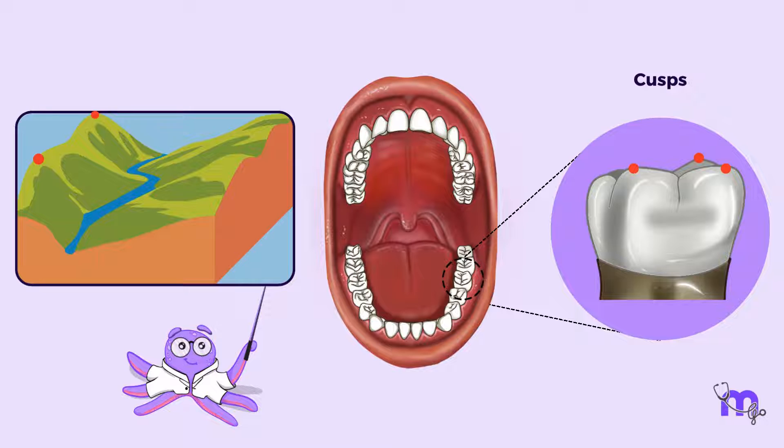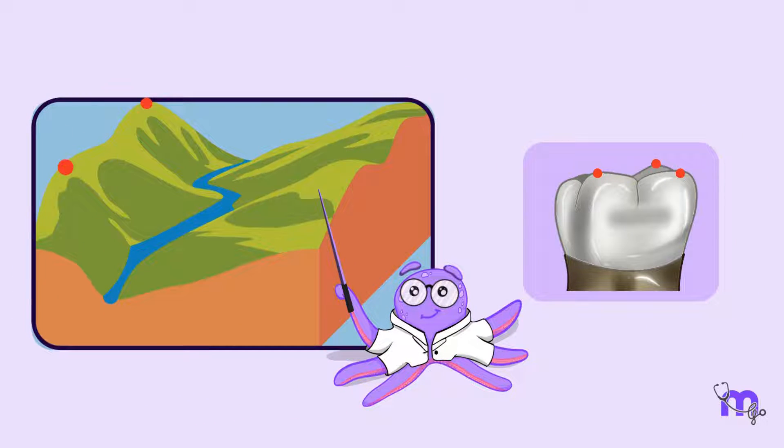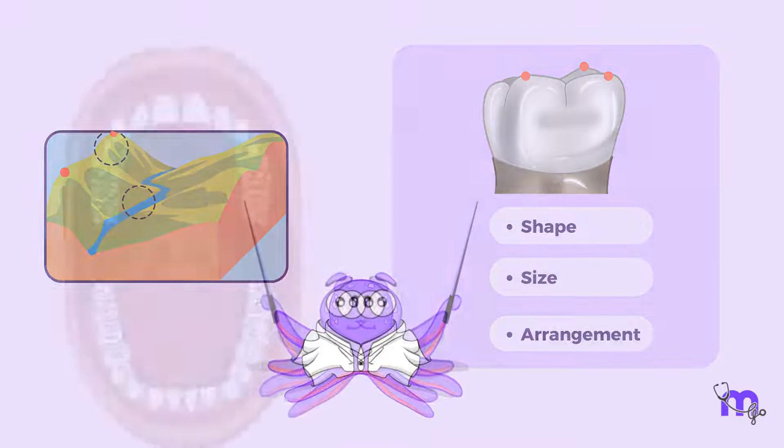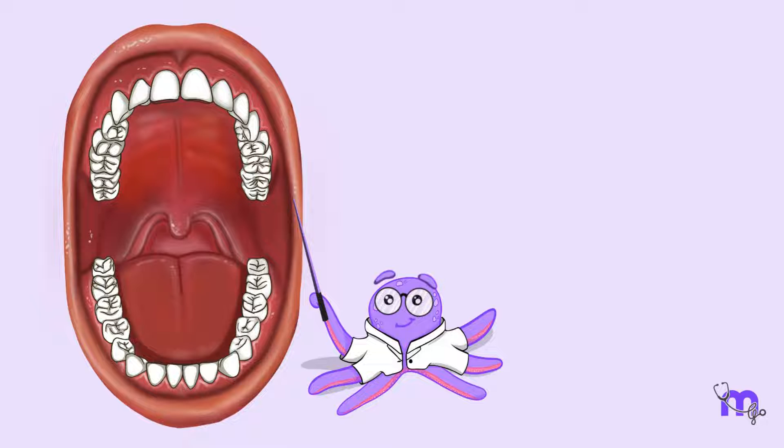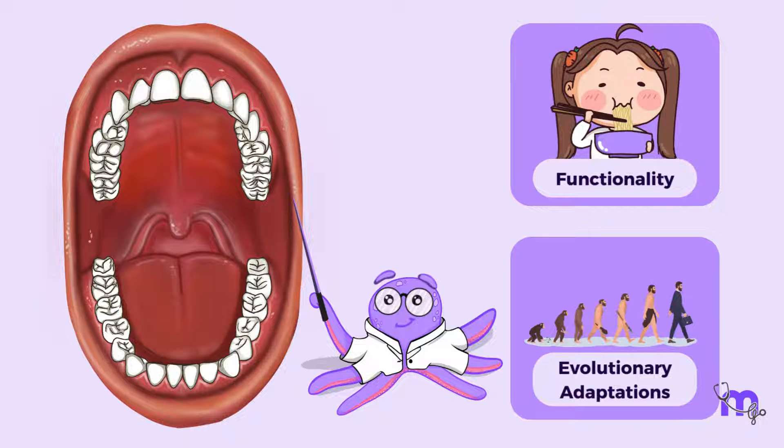They are designed to come together and interact with the opposing teeth when we bite and chew. Just as the landscape of the earth's mountains varies from one region to another, tooth cusps also vary in shape, size and arrangement. The arrangement and number of cusps on different teeth are far from uniform and tell a compelling story about the tooth's functionality and evolutionary adaptations.